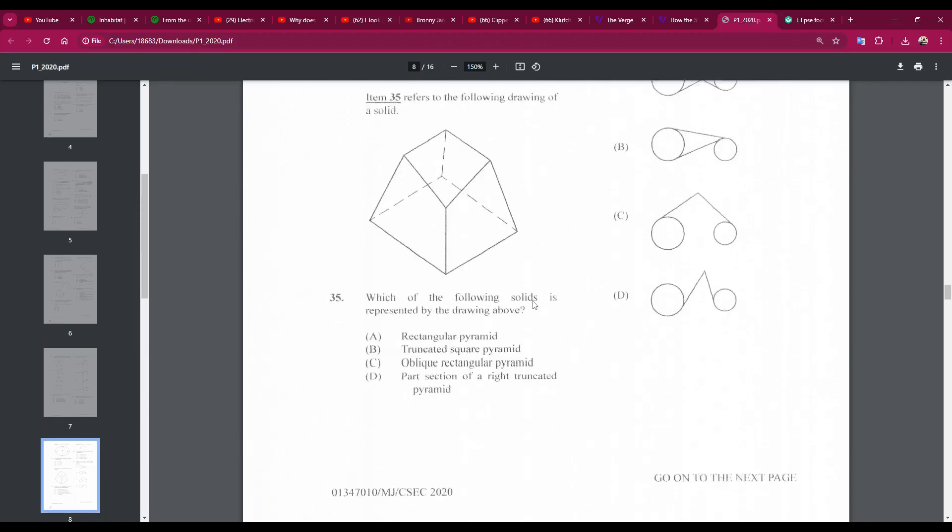Number 35: which of the following solids is represented by the drawing above? So it's a square-based pyramid. It's a truncated square pyramid. It's not a rectangular pyramid, and it's not a right truncated pyramid. Anyway, B, number 35B.